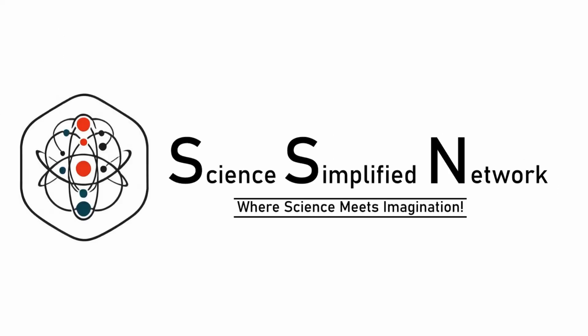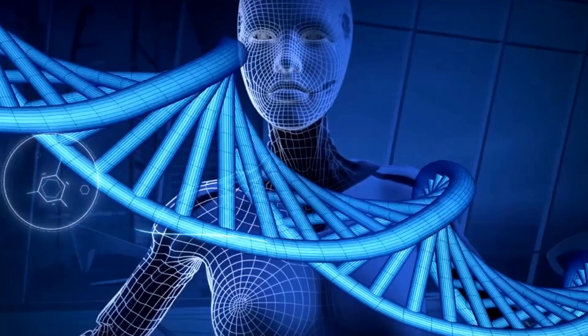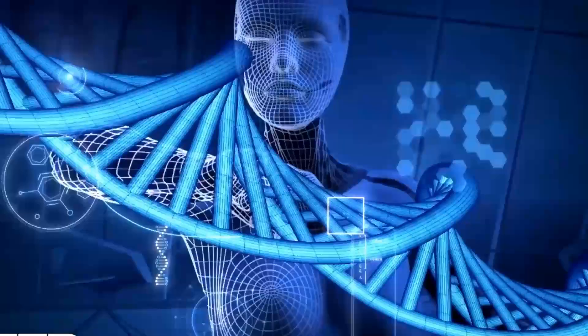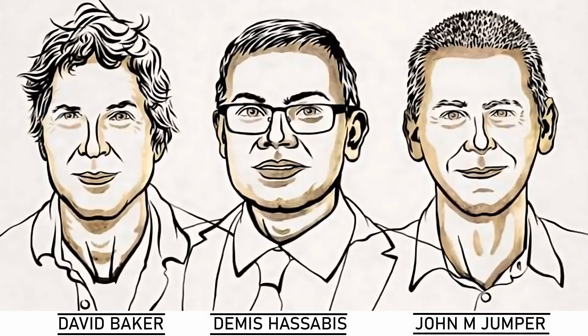Hello SSN viewers. The 2024 Nobel Prize in Chemistry was all about groundbreaking achievements in understanding proteins, thanks to three brilliant scientists: David Baker, Demis Hassabis, and John Jumper. Let's break down why their work is so exciting and how it's changing the world.